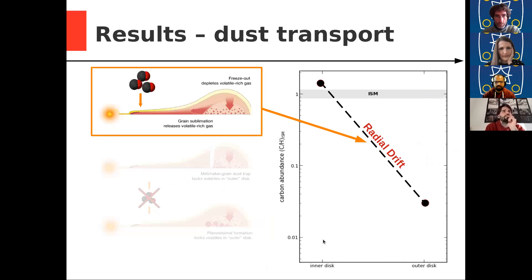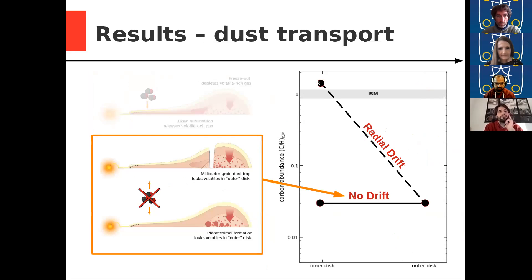But what about the dust transport? If we have radial drift, in this case, and we see a lot of CO in the inner disk, we will see something like this in this plot. We have a lot of depletion in the outer disk, and we see a lot of the CO back in the inner disk. If we have dust locking, then we would expect something like this. So we have depletion in the outer disk, but we see very similar depletion in the inner disk because the carbon is trapped in the outer disk.